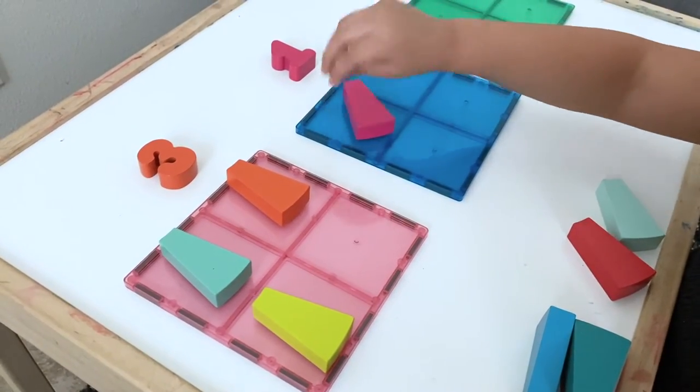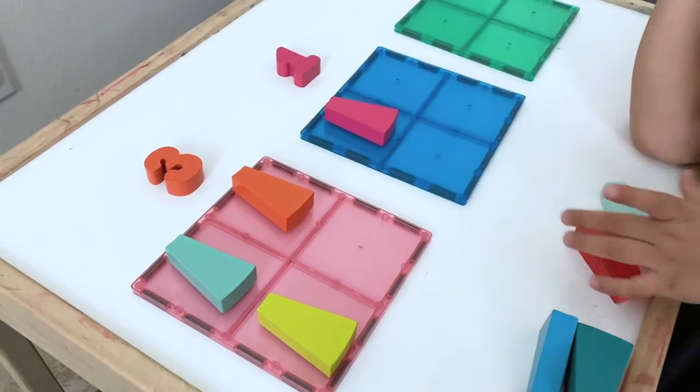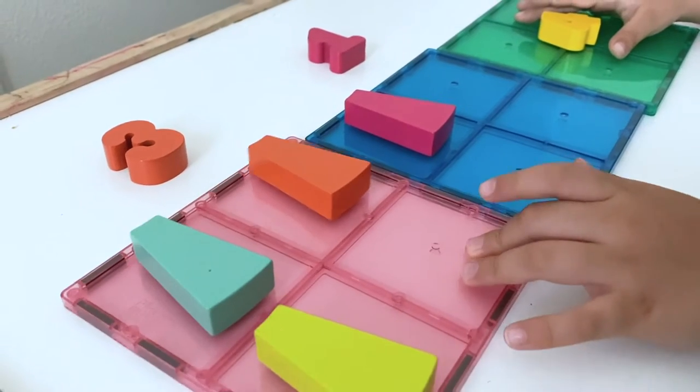Then say, okay, we have three pieces in this box and one piece in this box. How many pieces are there all together? Then you could count them all together.